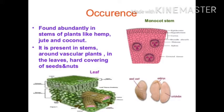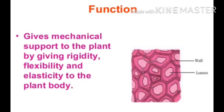Often these walls are so thick that there is no internal space inside the cell. This tissue is present in the stem around the vascular bundle, in the veins of the leaves and in the leaves. It provides strength to the plant parts. The function of sclerenchyma: it gives mechanical support to the plant by giving rigidity, flexibility and elasticity to the plant body — the tissue present in the stem around the vascular bundle, in the veins of the leaves and the hard covering of seeds and nuts. It provides strength to the plant parts.